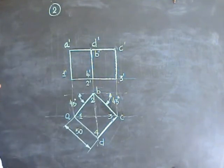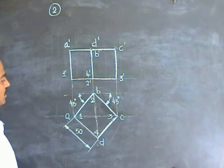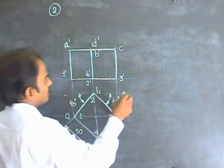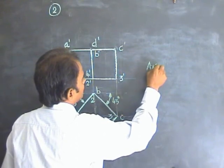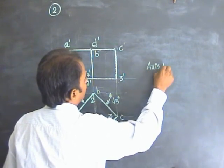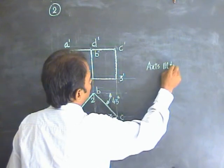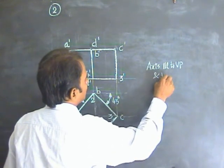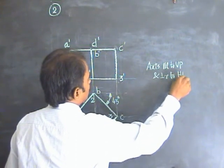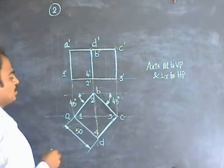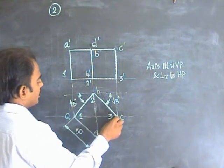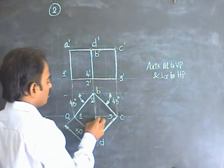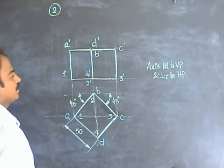This is a very simple case. Here also, the cube is resting on the ground with its axis parallel to VT and perpendicular to HT. So we are able to get the true shape — the true square on the HT. That is why we start the top view of the cube first, then project from that. Thank you.